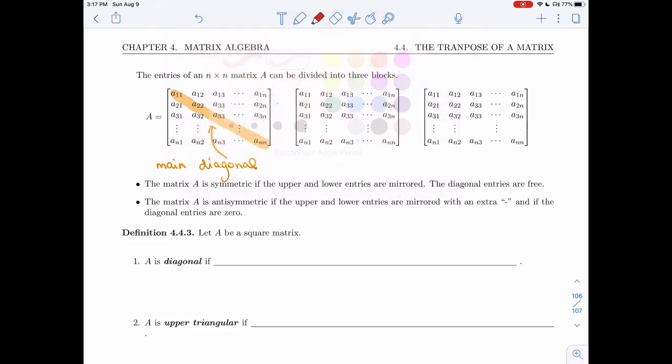And then we have the ones that are above the main diagonal, so all of these. So these are the entries above the main diagonal, and I'll refer to them as the upper entries as well.